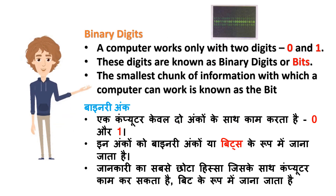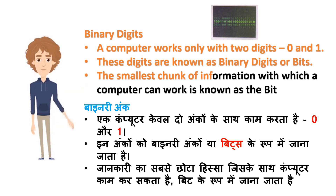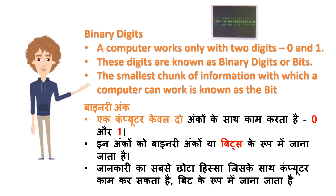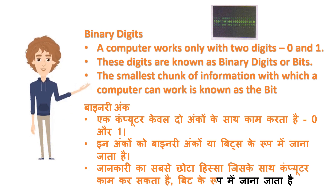Binary digits: A computer works only with two digits, zero and one. These digits are known as binary digits or bits. The smallest chunk of information with which a computer can work is known as the bit. Binary unk: Ek computer keval do ankon ke saath kaam karta hai, zero aur ek. In ankon ko binary ankon ya bits ke roope mein jana jata hai. Jaankari ka sabse chhota hissa jis ke saath computer kaam karta hai, bit ke roope mein jana jata hai.